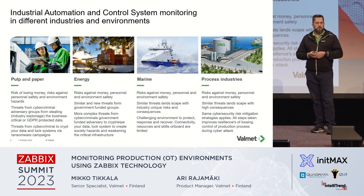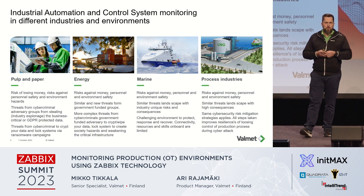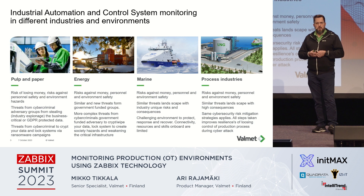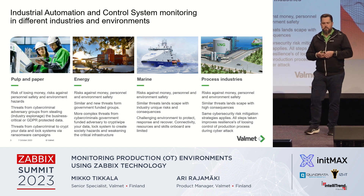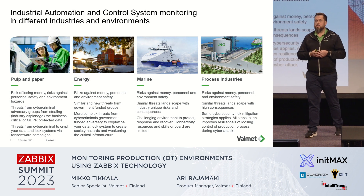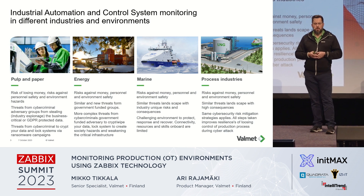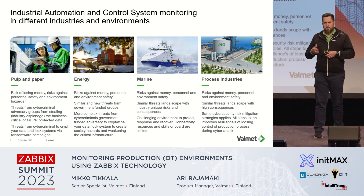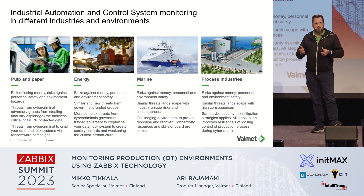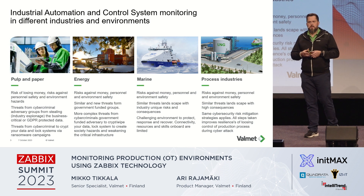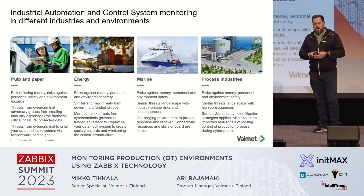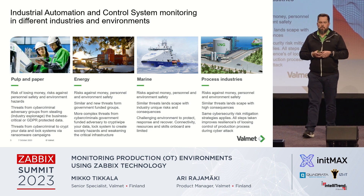We are the guys who are developing automation control systems for those, like DCS. Those are the environments that we are monitoring and giving visibility from to the customer, IT person, or getting alerts for service people to maintain and manage the different alerts. Interesting is that the same DCS used in pulp and paper can also be used in critical infrastructure like energy production, waste treatment facilities, and even marine — we have cruises where the same DCS environment is running.